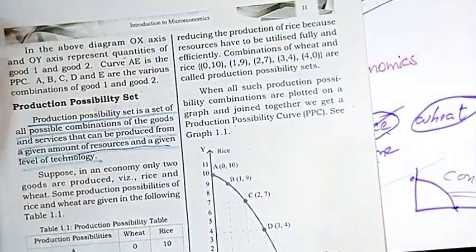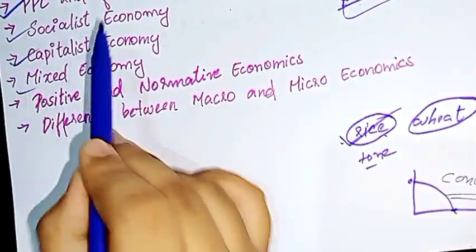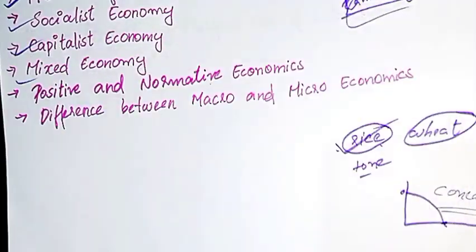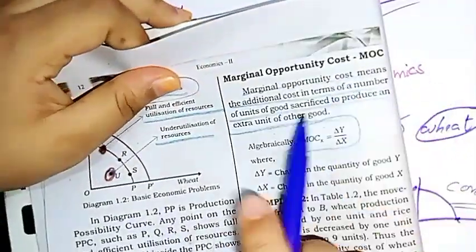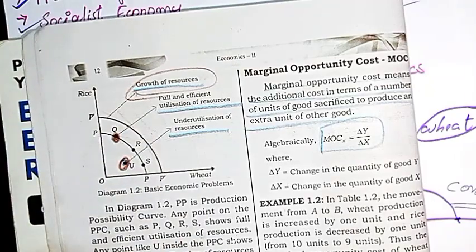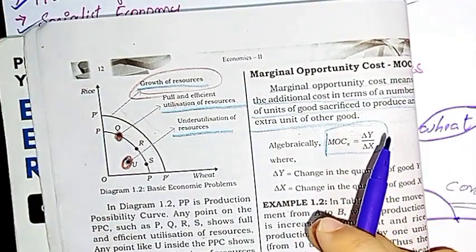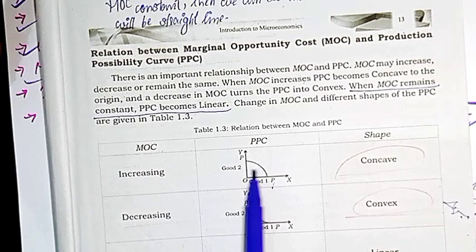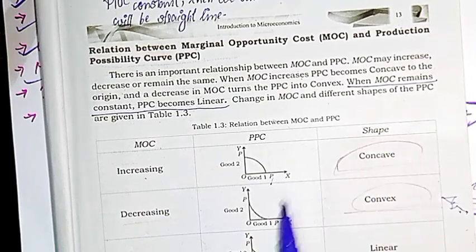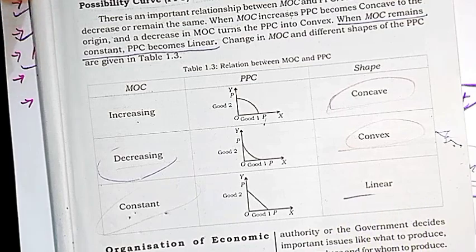The PPC is downward sloping and has a concave shape. The next feature relates to the socialist economy and capitalist economy. MOC means Marginal Opportunity Cost — the additional product sacrificed. For example, if you produce more rice, you must sacrifice some wheat.